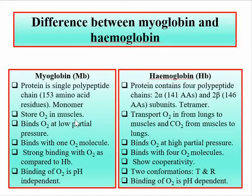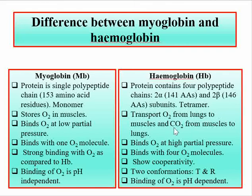Looking at the difference in function, myoglobin stores oxygen in muscles, while hemoglobin transports oxygen from the lungs to the muscles and transports CO2 from the muscles back to the lungs. So hemoglobin's role is transport, while myoglobin's role is to store oxygen in the muscles.